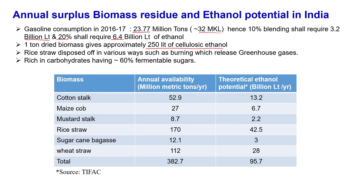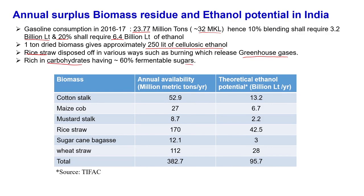Rice straw disposed of by burning releases greenhouse gases. This is particularly important because in northern India during October and November, farmers usually burn these rice and wheat straws, increasing greenhouse gases. Can there be a logistics or supply chain to collect this straw and use it to produce ethanol? An indicated approach is required from government and local agencies. Rice straw is rich in carbohydrates — almost 60 percent fermentable sugars — giving close to 60 percent yield of cellulosic material, meaning almost half the amount as ethanol.